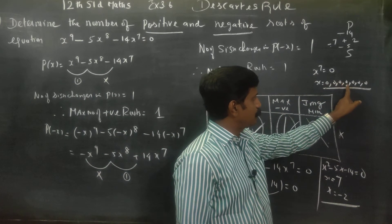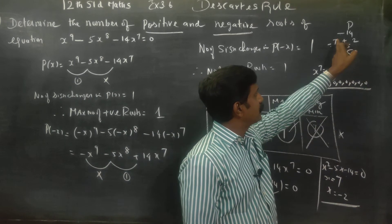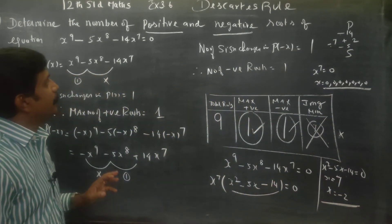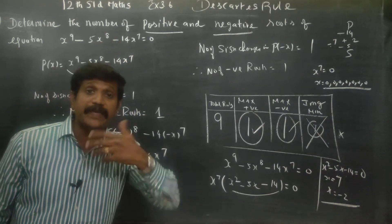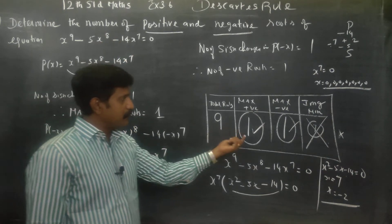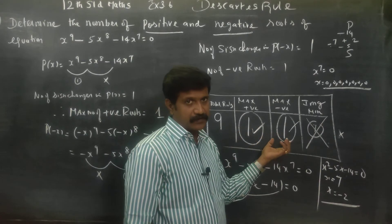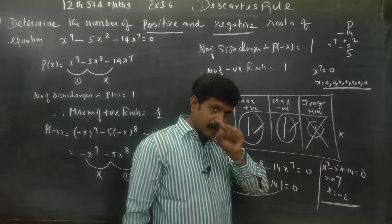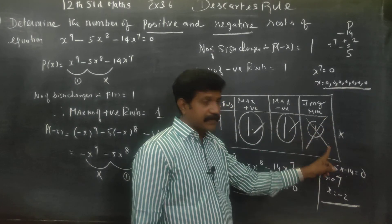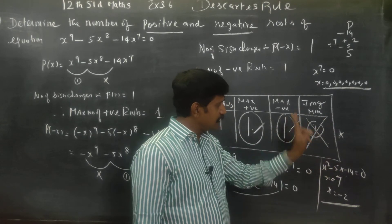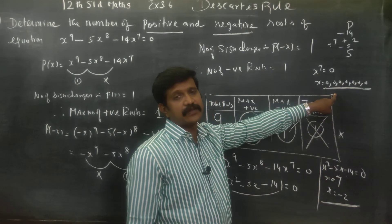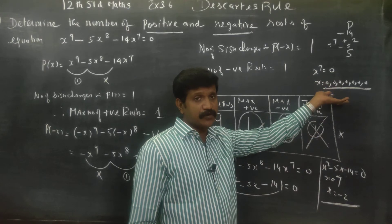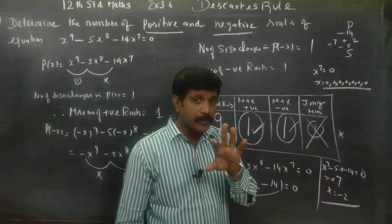So the roots are: 1, 2, 3, 4, 5, 6, 7 zeros from x power 7 equals 0, then the 8th root is x equals 7 (positive), and the 9th root is x equals minus 2 (negative). That accounts for all 9 roots: 7 zero roots, 1 positive root, and 1 negative root.